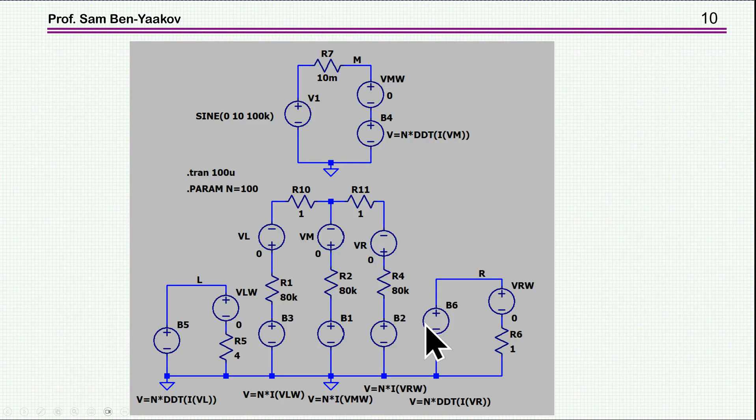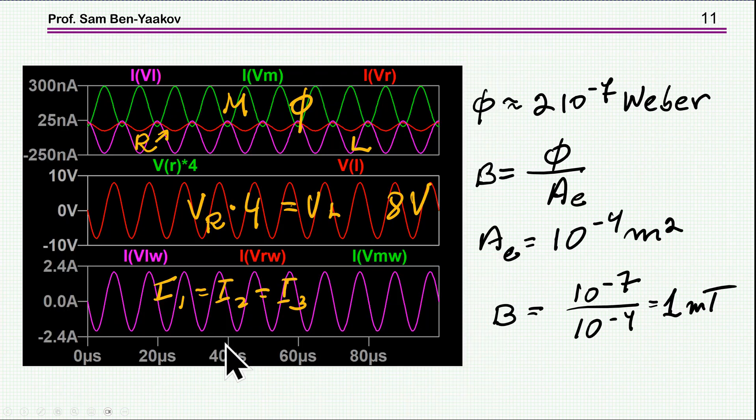So let's run now this simulation. Again I'm assuming that the reluctance is 80K, 1 over Henry, and then the excitation 10 volt loaded by 1 ohm and 4 ohm on the two sides. And here it is. So what we see here is first of all that all the currents are exactly the same. This is the current through the three windings. We see here now the voltages on the two side legs, and I multiplied one of them by four just to show that they are exactly the same. That is the ratio is 1 to 4. And you can see that they are the same, one on top of the other.